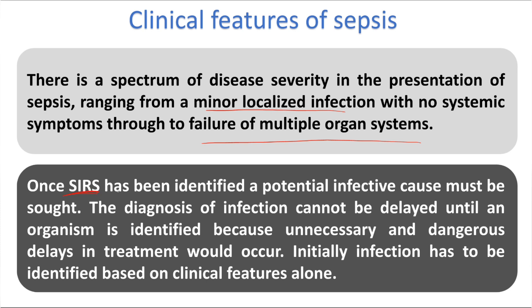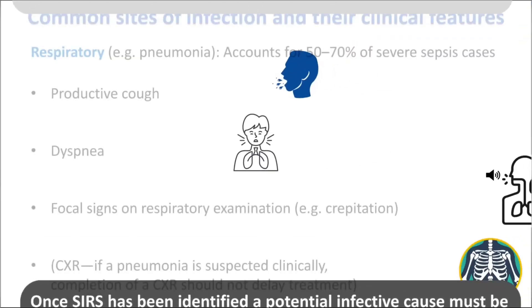Once sepsis has been identified, a potential infective cause must be searched for. The diagnosis of infection cannot be delayed until an organism is identified, because you have to start treatment and delay will lead to dangerous complications. Initially, infection must be suspected on clinical features alone. For example, if you suspect pneumonia, you don't need to wait for sputum culture and chest X-ray before starting antibiotics — start antibiotics first, then search for the exact diagnosis.